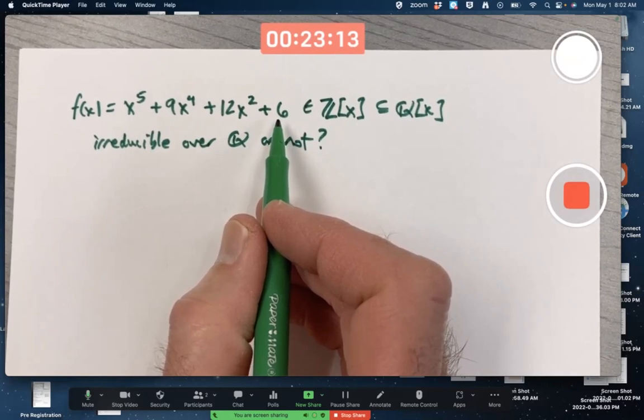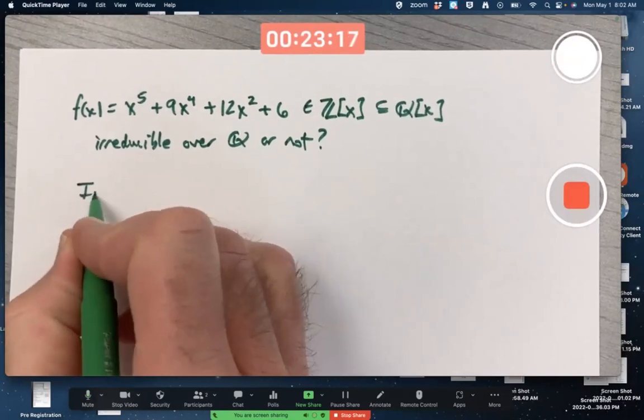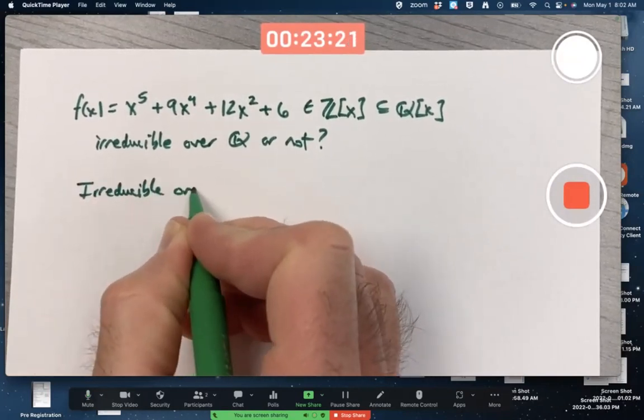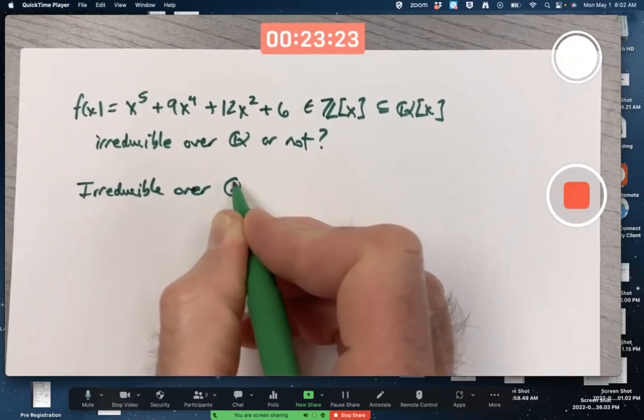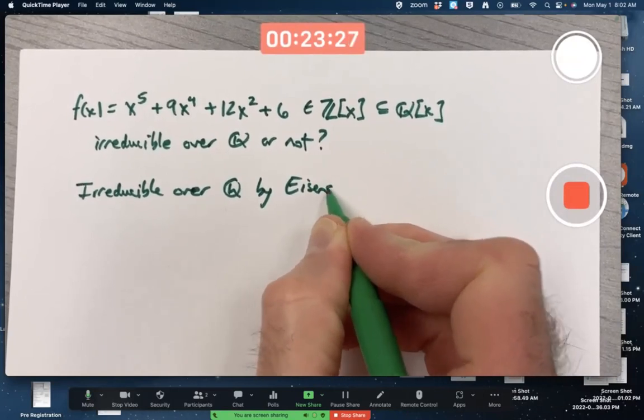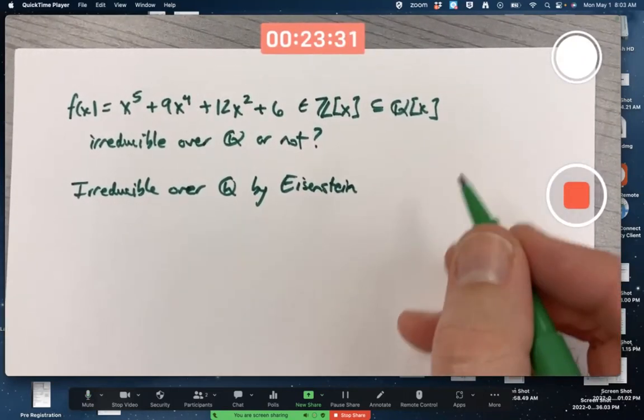All right, pretty clearly, p equals 3 works, right? It's irreducible over the rationals by not Einstein, but Eisenstein. We need to give Eisenstein his due compared to Einstein here.